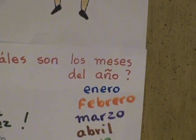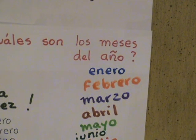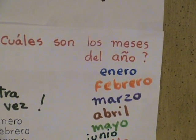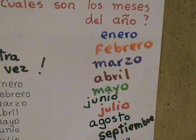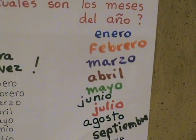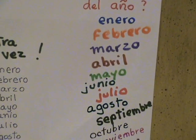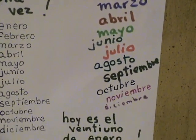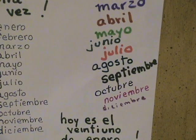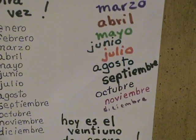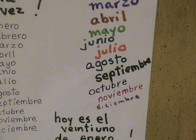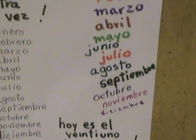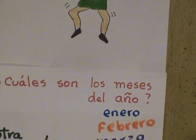Mira, this is new. Enero, febrero, marzo, abril, mayo, junio, julio, agosto, septiembre, octubre, noviembre, diciembre. Son los meses del año.